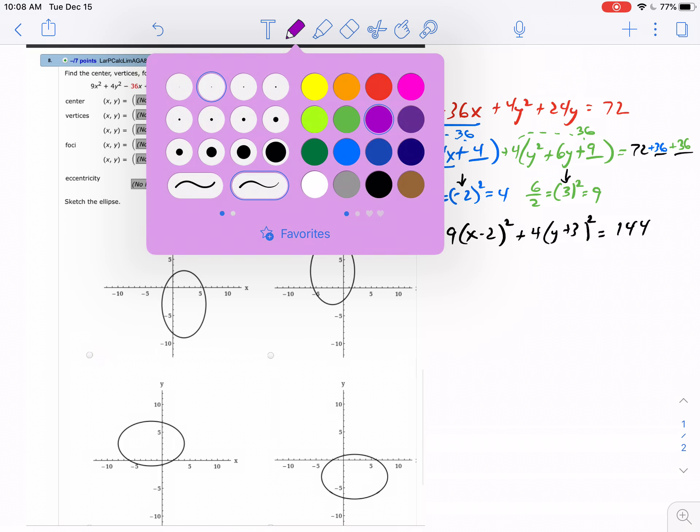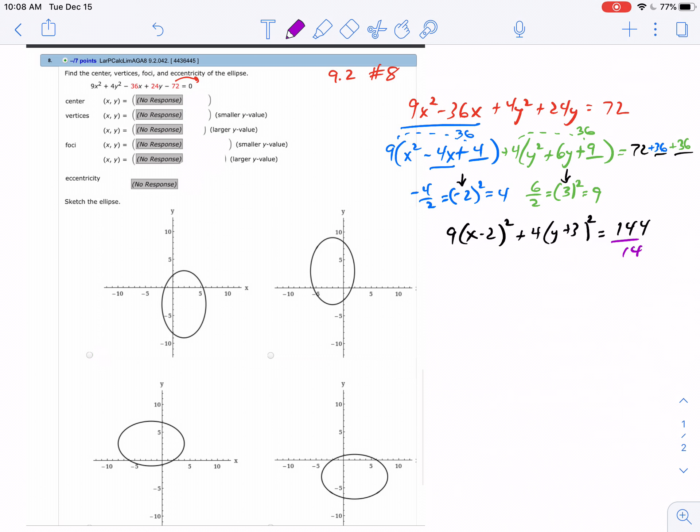Remember, with the ellipse we want to divide by 144 so that it equals 1. When you divide these two terms by 144...